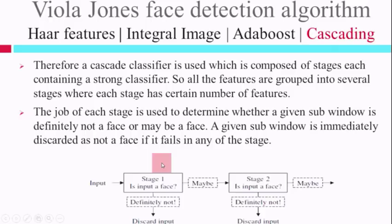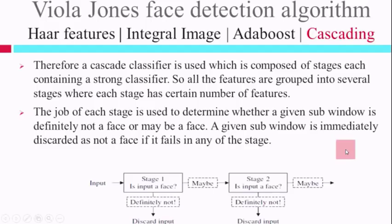If an input is given and it passes the first stage, it may be a face and needs further evaluation — done by the second stage. But if it does not pass the first stage, it is definitely not a face and is eliminated immediately. In real time, when detecting faces in any image, this cascading structure gives a great advantage: it quickly rejects areas or windows that do not have faces, avoiding unnecessary computation.